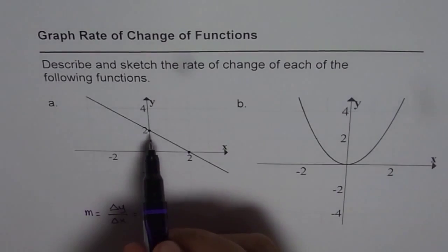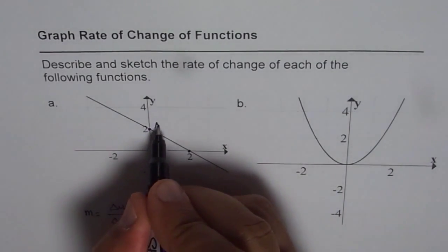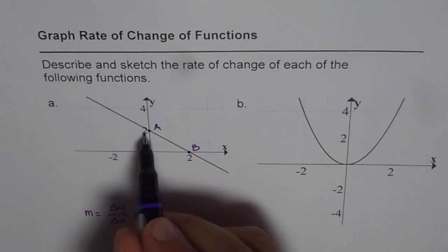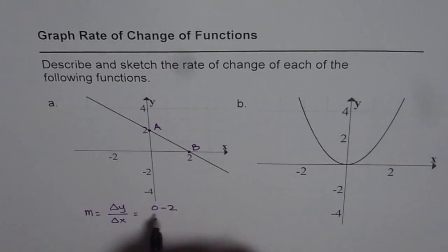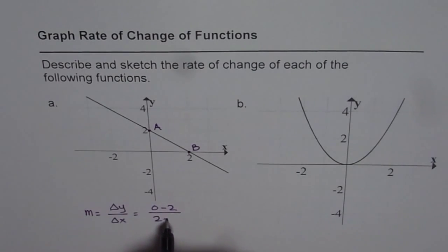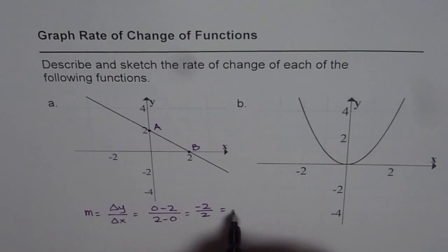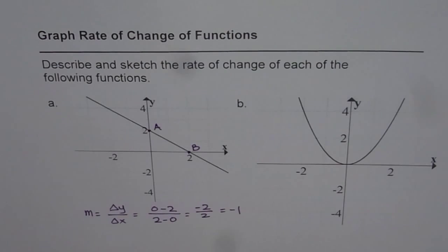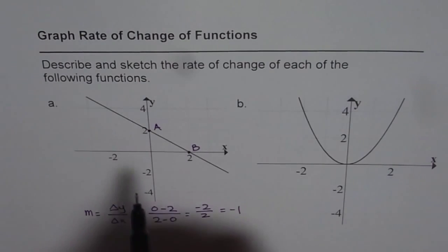Change in y is, if I'm moving from this point, let's say point a to point b, we move downwards by two units. So change in y is 0 minus 2, and change in x is from 0 to 2, so it is 2 minus 0. That gives us minus 2 over 2, and that equals minus 1. You can take any two points on this line, you'll get minus 1 as the result. Therefore, the slope is constant, and it is equal to minus 1.